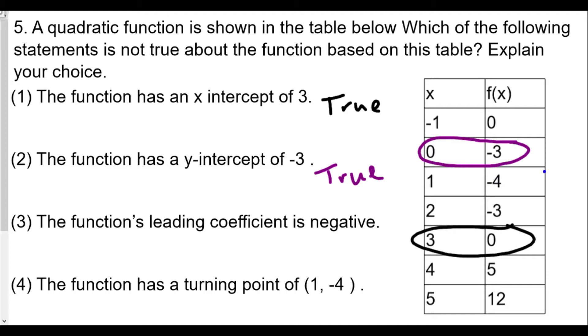So one comma negative four. And a turning point in this case is going to be the vertex. And we definitely have a point of (1, -4). So one comma negative four here, and we'll see here that the values around them, the y-values are going to mirror each other. So this is actually going to be true.